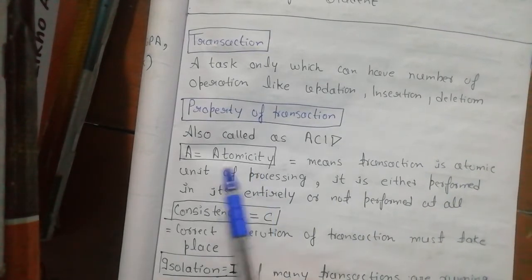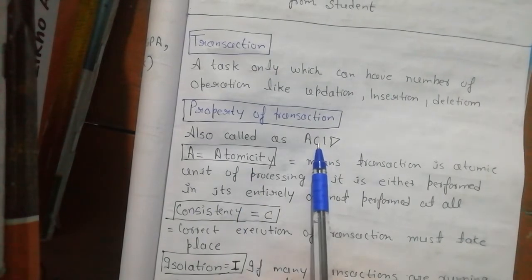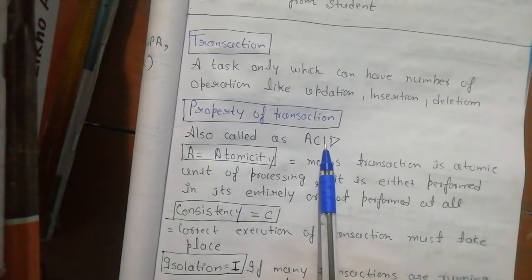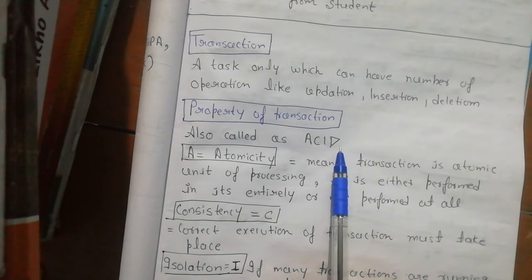What is ACID? A is Atomicity, C is Consistency, I is Isolation, and D is Durability.